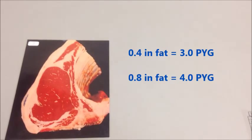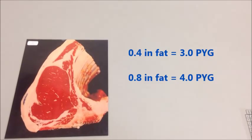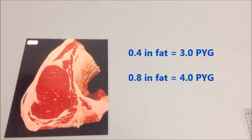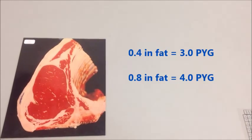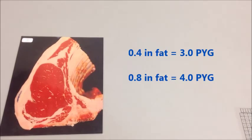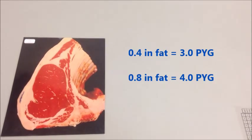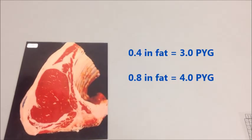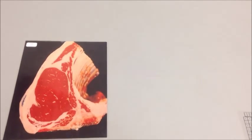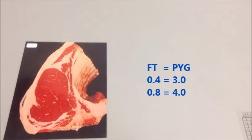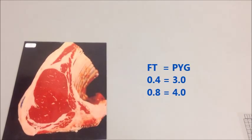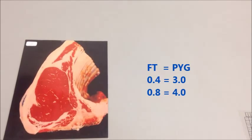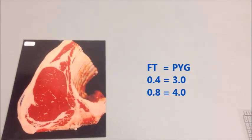If you have four-tenths of an inch of fat at the ribeye, you're going to have a 3.0 PYG. If you have eight-tenths of an inch of fat, you're going to have a 4.0. An easy way to remember that is: four is three, and eight is four.